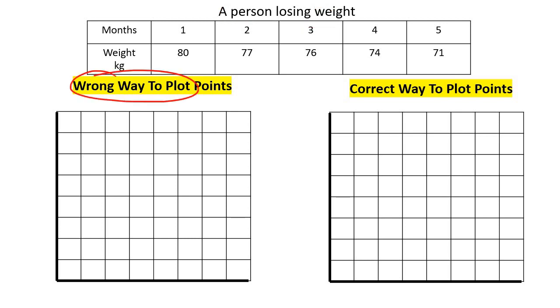And this would be the wrong way to plot the points. So look here: 1, 2, 3, 4, 5. So we could probably go 1, 2, 3, 4, and I'm just going to add another one here. That's not the wrong thing, I just didn't make my graph big enough. That's all fine, nothing's wrong with that.